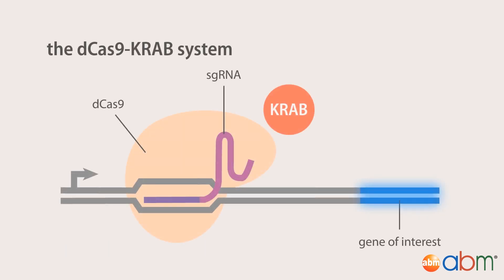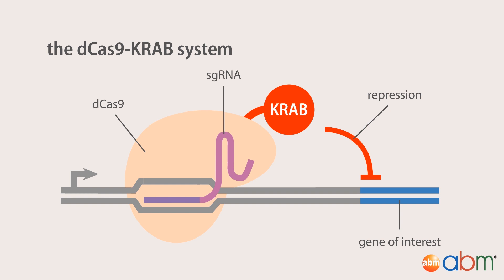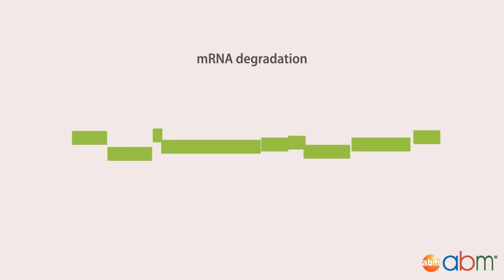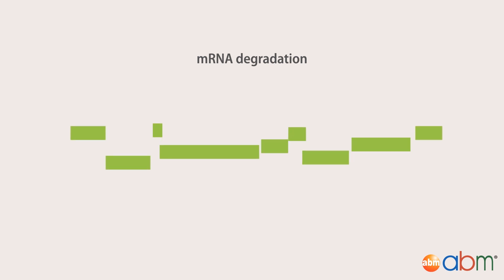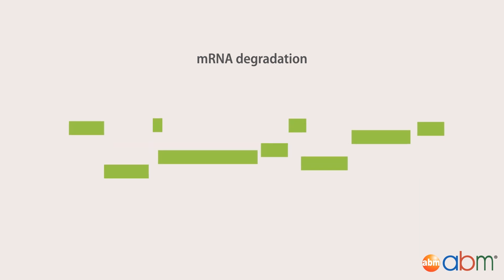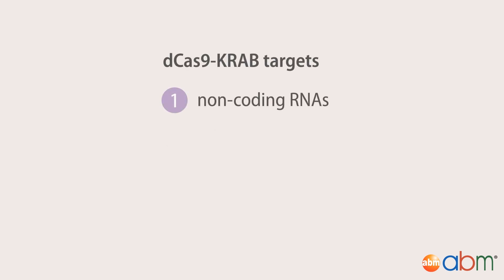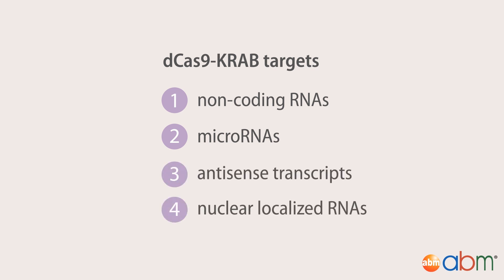When dCas9 is fused to the transcriptional repressor KRAB, it can recruit histone modifiers for five- to ten-fold reversible repression of gene expression via the formation of heterochromatin. Unlike the RNA interference method, which relies on the degradation of mRNA in the cytoplasm, dCas9-KRAB enables silencing at the DNA level, opening up a new array of targets such as non-coding RNAs, microRNAs, antisense transcripts, and nucleolus-localized RNAs.